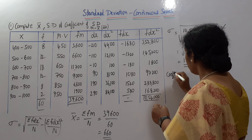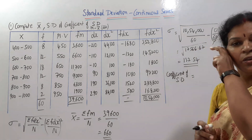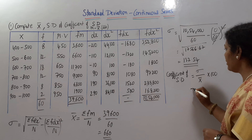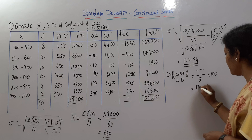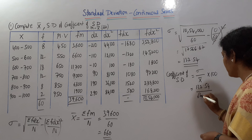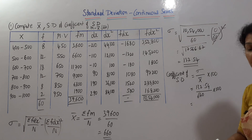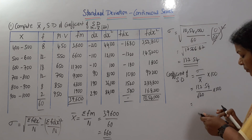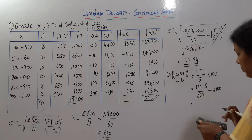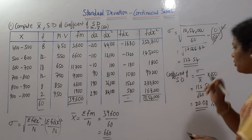Now for Coefficient of Standard Deviation, the formula is rho by x-bar into 100. Rho is 132.54 divided by x-bar value 660, multiplied by 100. So 132.54 × 100 / 660 = 20.08. This is the Coefficient of Standard Deviation.